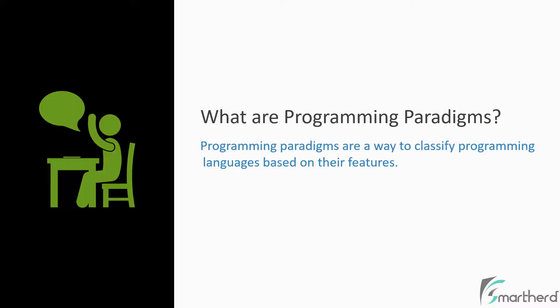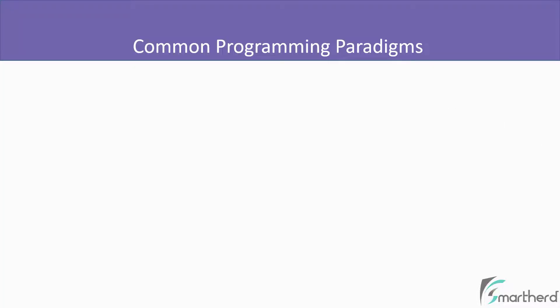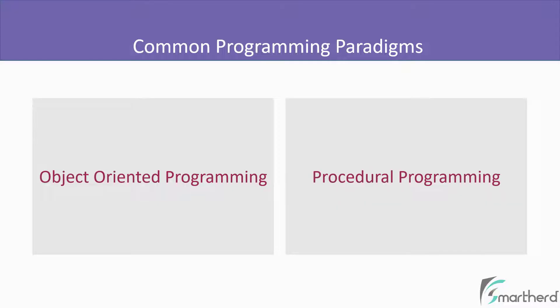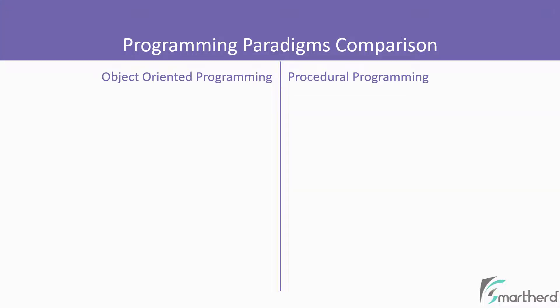Programming paradigms are a way to classify programming languages based on their features. And there are a lot of paradigms that exist in the world of programming. Two of the most common programming paradigms are object-oriented programming and procedural programming. So let us explore the differences between them.